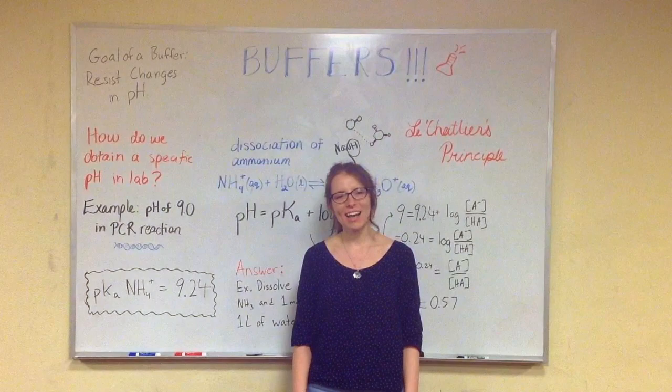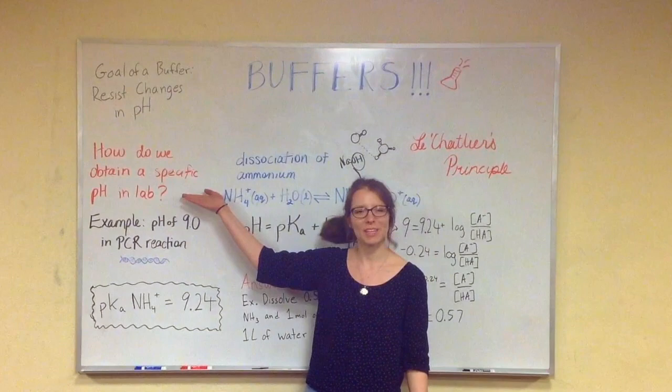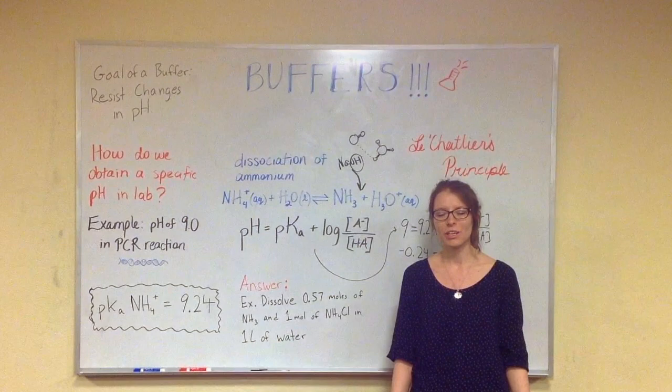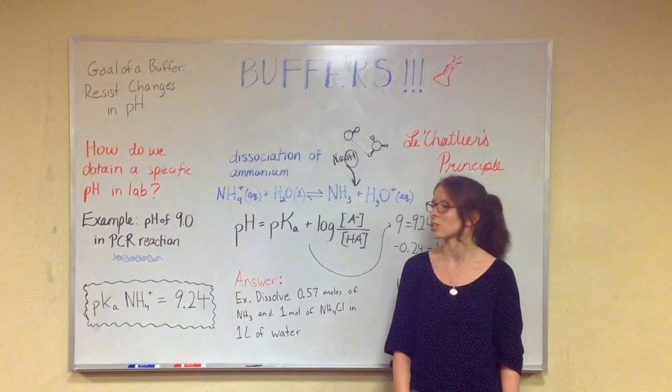Hi, I'm Katya and today Amlika and I will be showing you how to obtain a specific pH in lab. We're going to do this using buffers. A buffer is a solution which resists change in pH. It's created by adding a weak acid and its conjugate base to the solution.